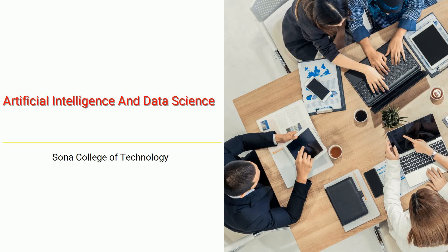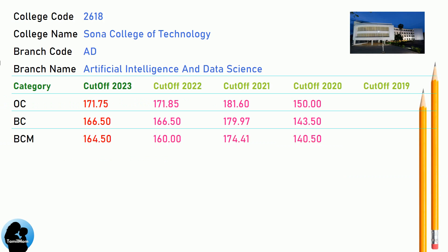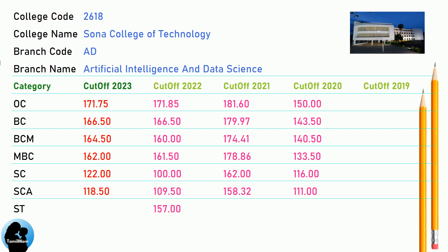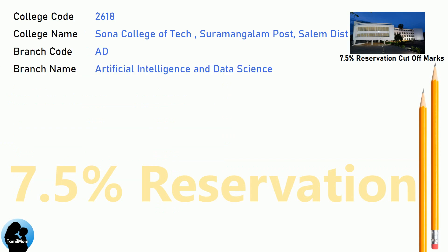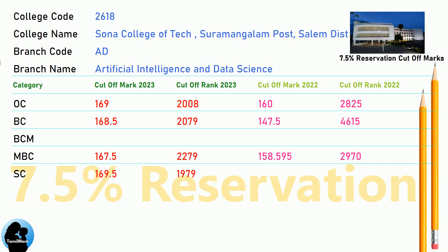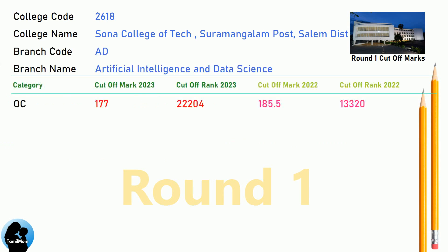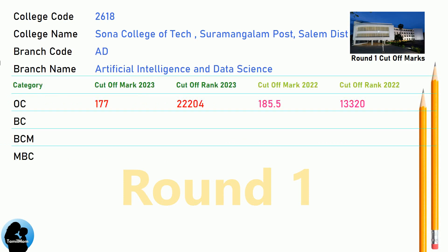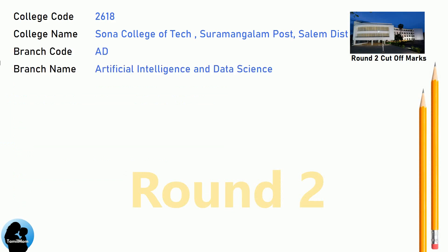DNA cut-off for Sona College of Technology in Artificial Intelligence and Data Science. DNA 7.5 Reservation cut-off for Sona College of Technology in Artificial Intelligence and Data Science. DNA Round 1 cut-off for Sona College of Technology in Artificial Intelligence and Data Science. DNA Round 2 cut-off for Sona College of Technology in Artificial Intelligence and Data Science.